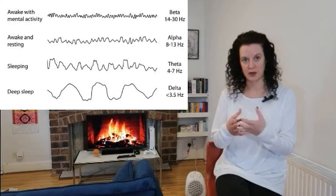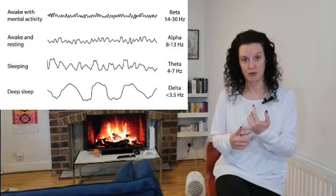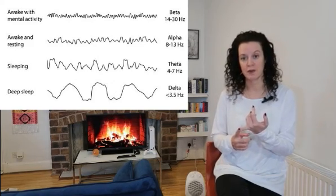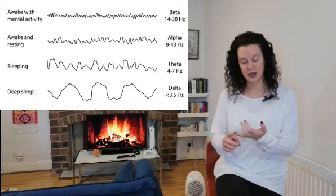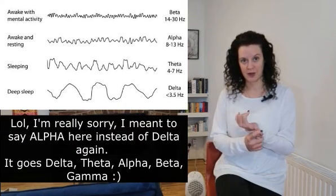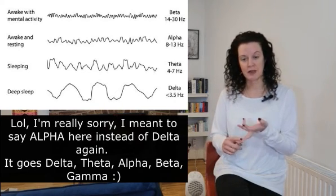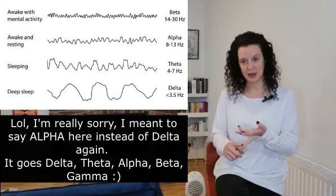The lowest is delta, which is associated with very deep sleep like REM sleep and hypnosis. Then you have theta, alpha, beta, and gamma. What you're looking for in a daily meditation is alpha, because this is the relaxed state — you can call it the flow state, being in the zone. This is what you want to achieve.